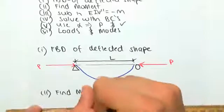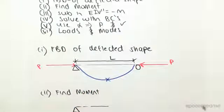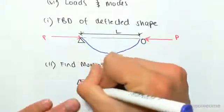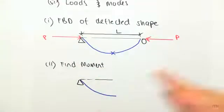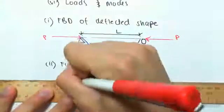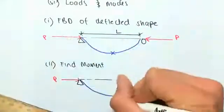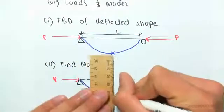So here's our support—that's normally where it would be, but we're looking at equilibrium of the deflected shape, so it's going to be like that. We have a force P, and we're going to have some type of... so we have the shape.